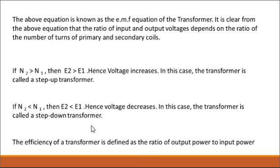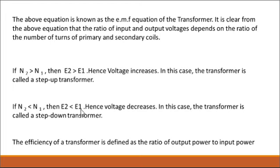In a step-down transformer, N2 is less than N1 — the number of turns in the primary coil is greater than in the secondary coil — so E2 is less than E1 and voltage decreases. Such a transformer is called a step-down transformer. An example is a bed lamp, which requires only 6 volts, while household electricity is 220 volts. The step-down transformer converts 220 volts to 6 volts.